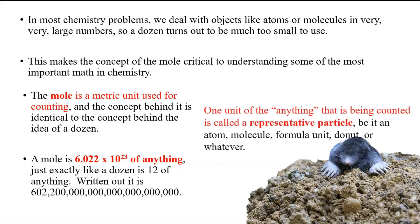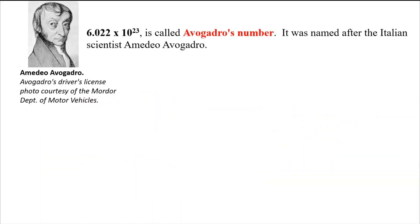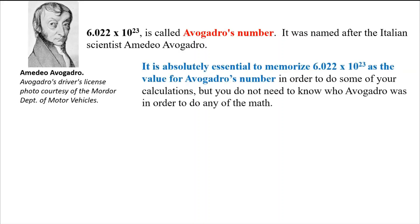The things you're counting are referred to as representative particles — they're considered to be identical, as in the case of atoms. You'll also hear the term Avogadro's number, which basically just means 6.022 times 10 to the 23rd. It was named after an Italian scientist, Avogadro, who did some of the initial work on this — though he didn't actually come up with the number.